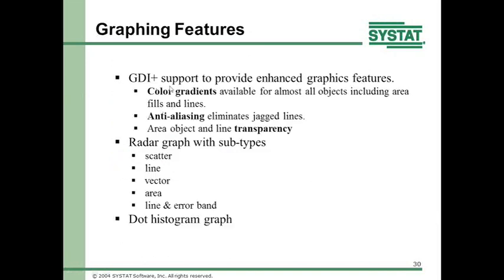Graphing features: GDI+ support has been added, which means three things. Color gradients have been added. Anti-aliasing to eliminate jagged lines has been added. And area objects and lines can become transparent to varying degrees. This is really useful for PowerPoint presentations. We also added a radar graph with various subtypes — scatter, line, vector, area, line, and error band. And the dot histogram graph, which shows a visual representation of a histogram for your data.